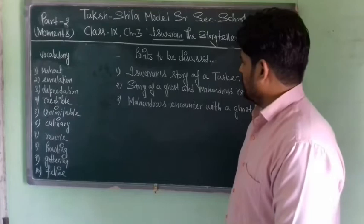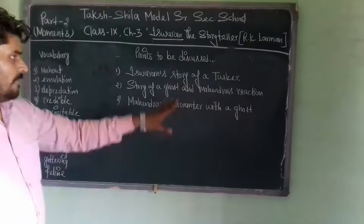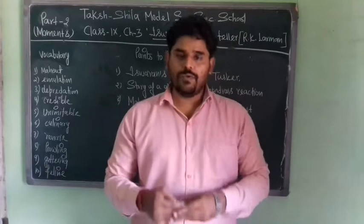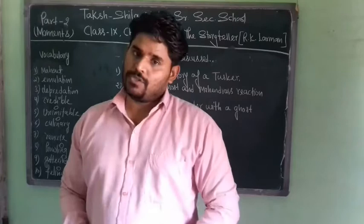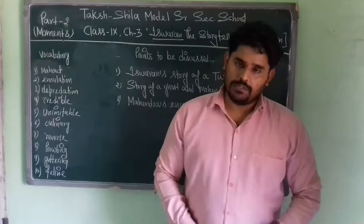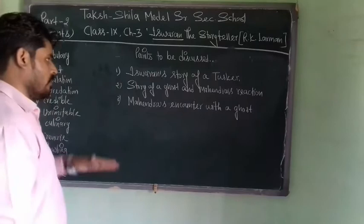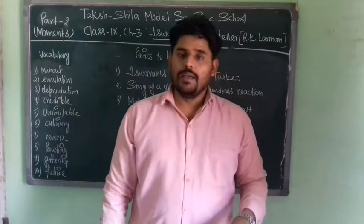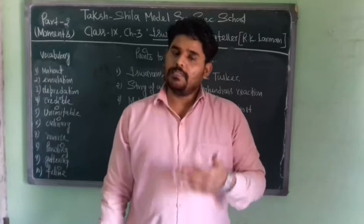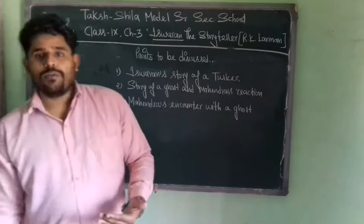The first point is 'Iswaran's Story of a Tusker.' In the last part of this chapter, we ended at Iswaran's habit of telling stories and the way he actually told them. In this part number two, we are going to read about Iswaran's story of a Tusker. Iswaran was a great storyteller — he did not use a simple way of narrating incidents. He used a very extraordinary way of narrating events.